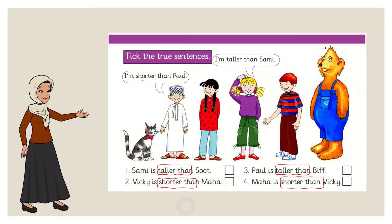What is Sammy saying? I am shorter than Paul. What is Paul? This is Paul. Who is tall? Paul, right? Who is short? Sammy. So Sammy is saying, I am shorter than Paul. What would Paul say if he compares himself to Sammy? Can you help me using the word tall? I am taller than Sammy. Please write this in your book.